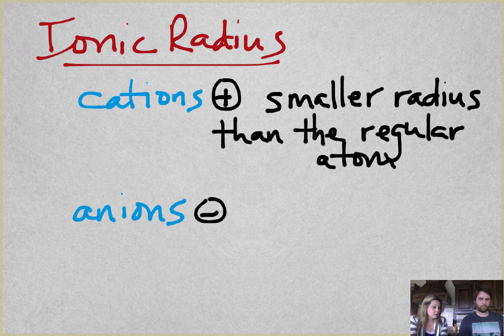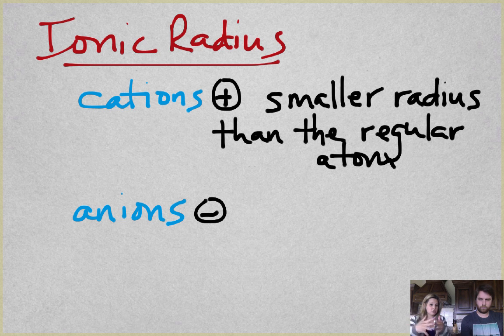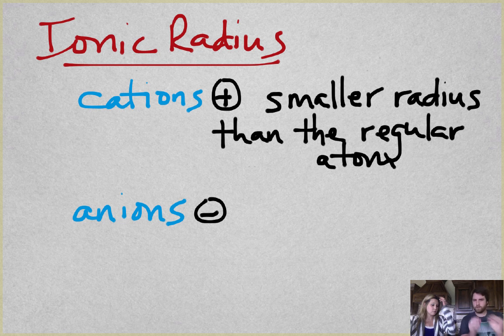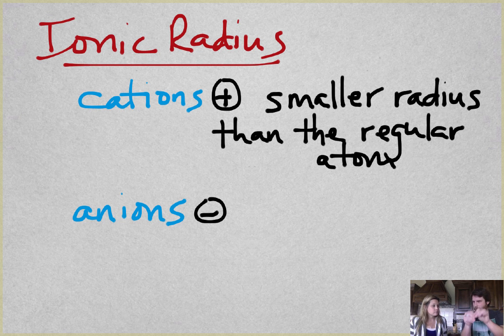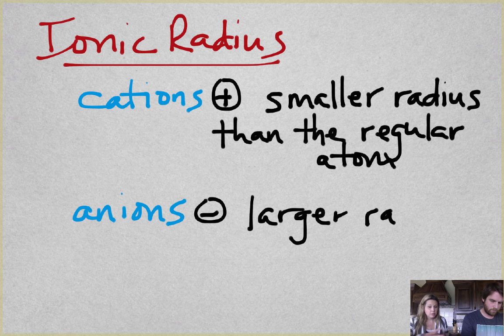For anions, what's important is what we call electron repulsion. So if I have six valence electrons and I add two more in, they're going to repel each other. They have the same charge, so they're going to repel. You're sticking in electrons where they don't really fit anyway, so they're going to spread out more. So the radius would get larger because the electrons repel each other.